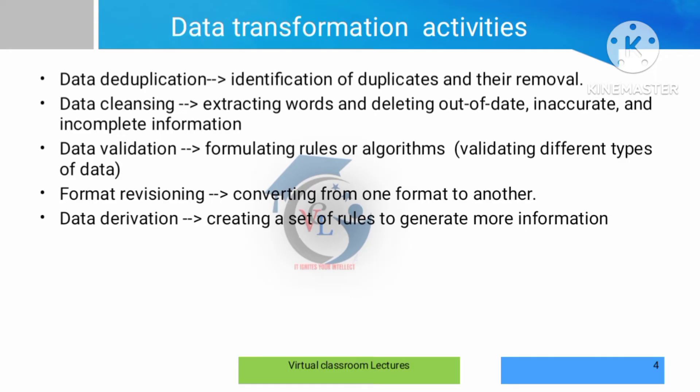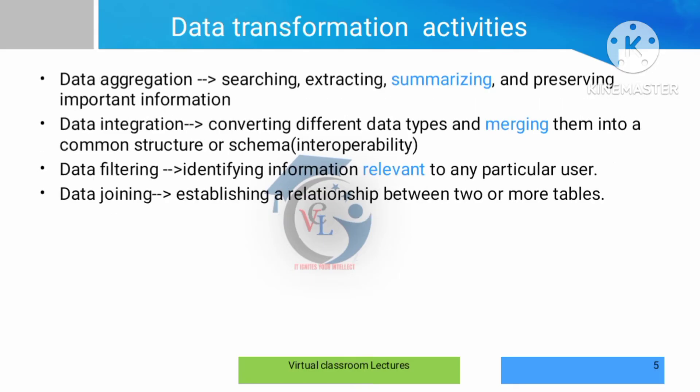We can perform a format revision and correction. Format revision converts data into the correct structure. Then there is data derivation — deriving different information from existing fields. For example, given a date of birth, we can derive the age. We can create a different field of data by calculating from an existing field.